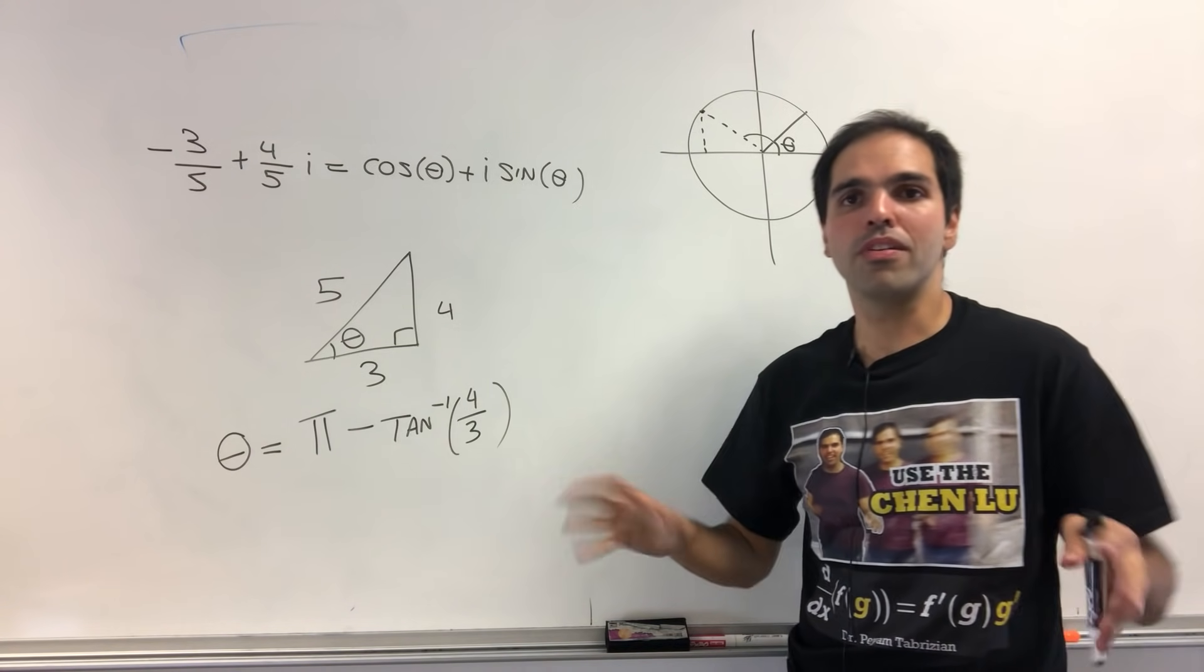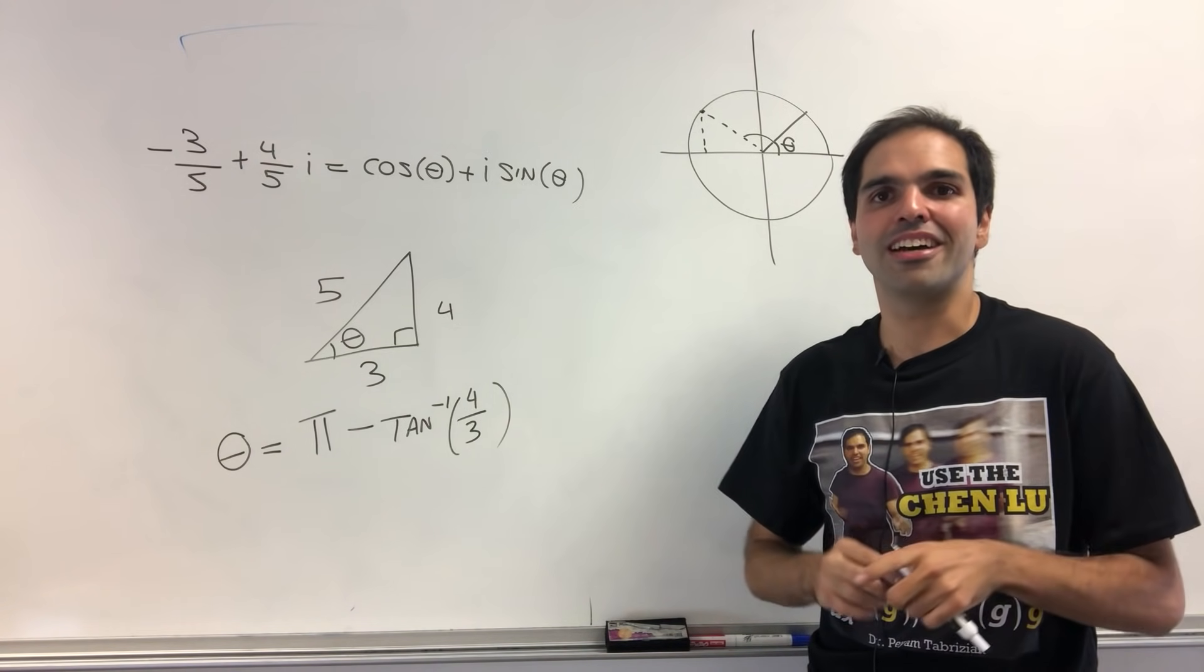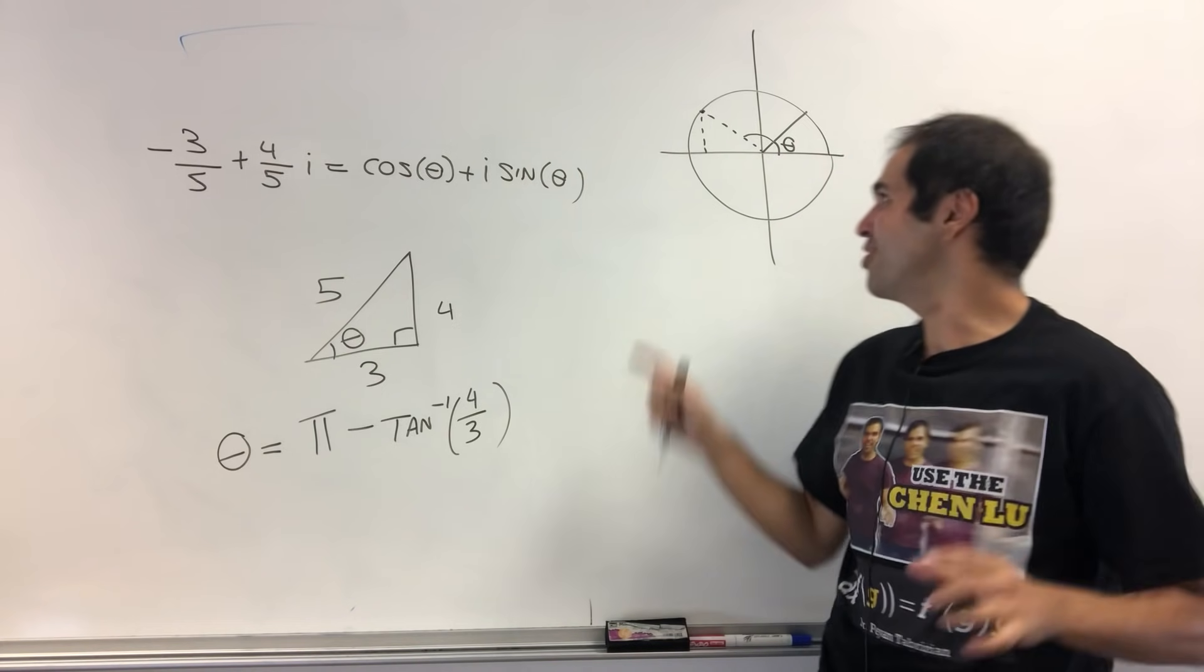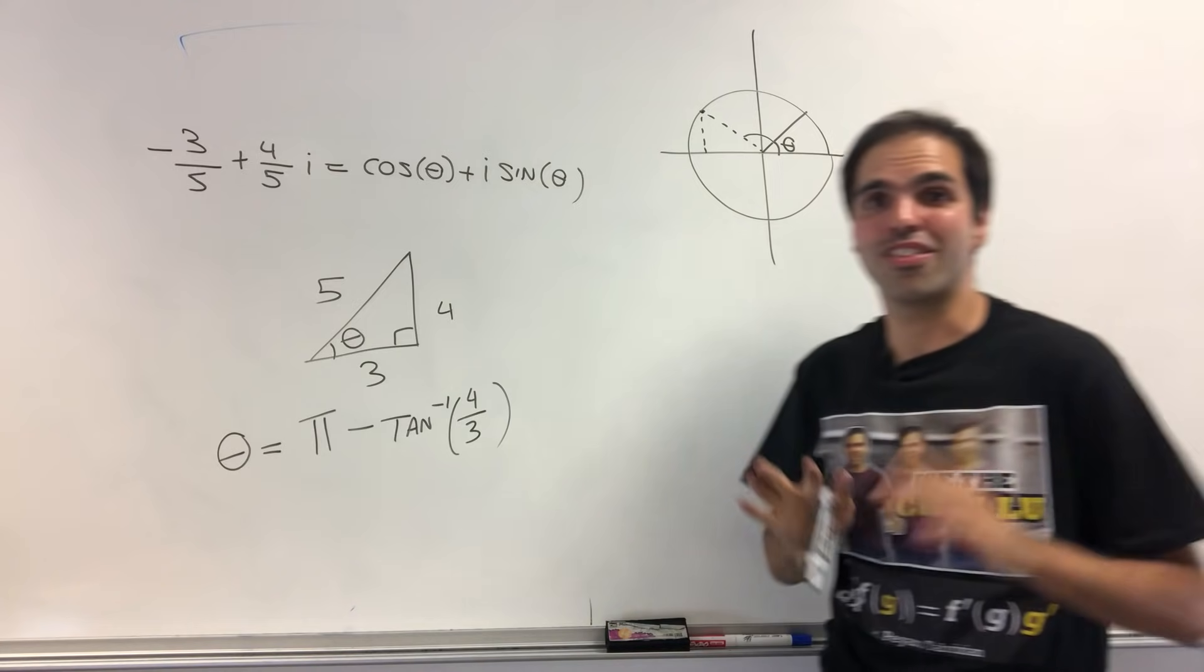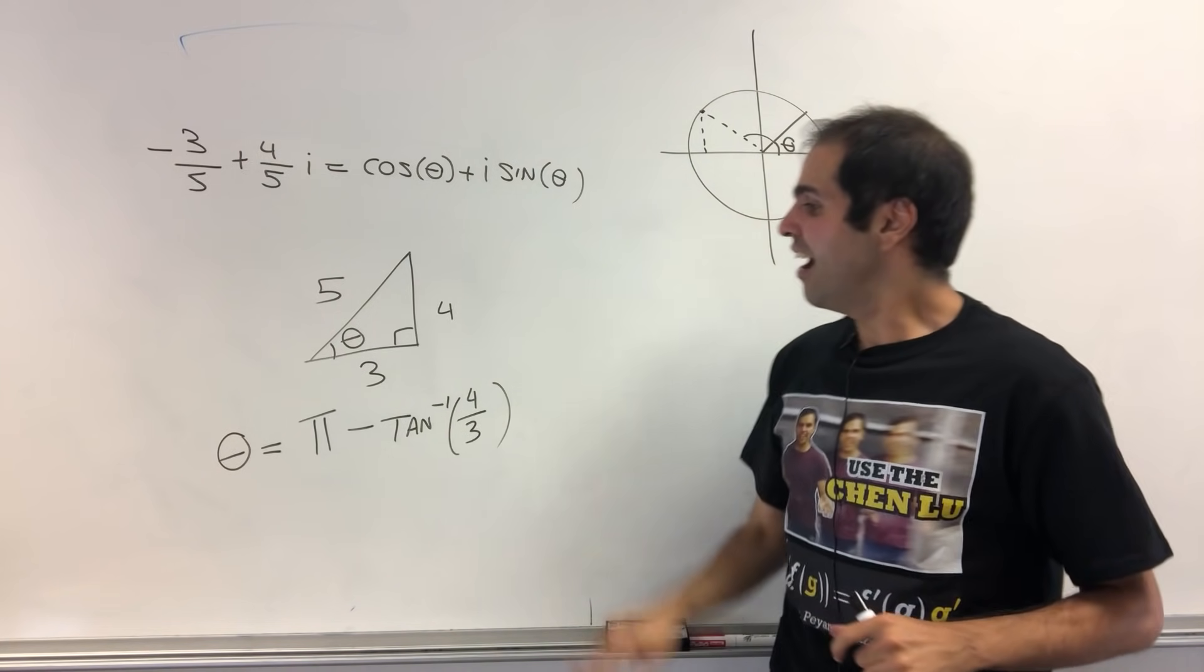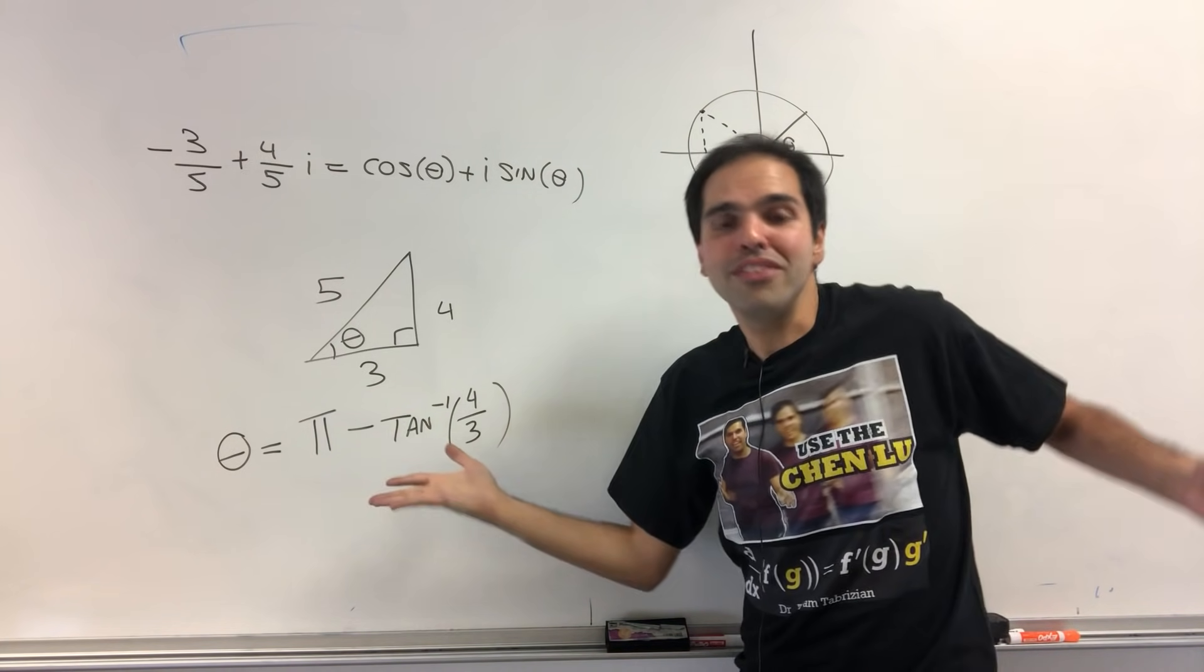And again, it's a bit complicated, because for arctangent, the output is between minus pi over 2 and pi over 2. So it's not just arctangent of minus 4 thirds. That wouldn't work. All right.